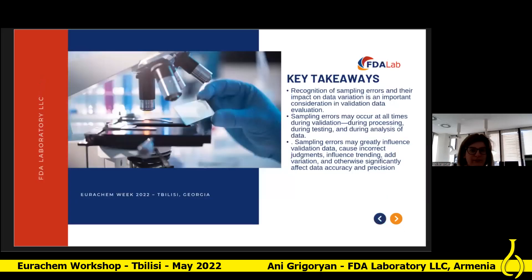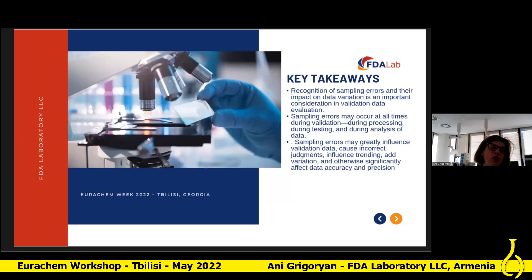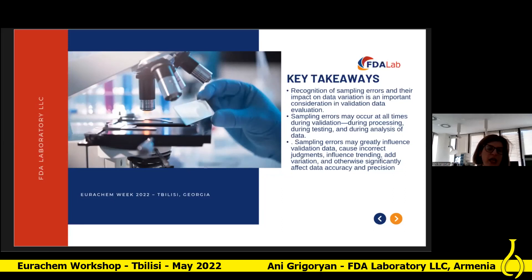In summary, recognition of sampling errors and their impact on data variation is an important consideration in validation data evaluation. Four general categories comprising ten individual sampling errors have been identified. Sampling errors occur at all times during validation — during the process, during testing, and during data analysis. Validation professionals must always be aware of the potential for sampling errors and their impact on validation data and analysis. Sampling must not be overlooked as a critical aspect of successful validation. Sampling errors may greatly influence validation data, causing incorrect product judgment, influencing trending and variation, and otherwise significantly affecting data accuracy and precision.